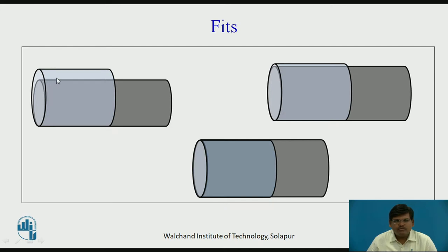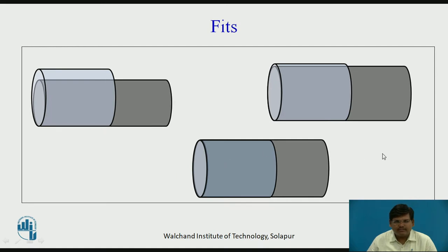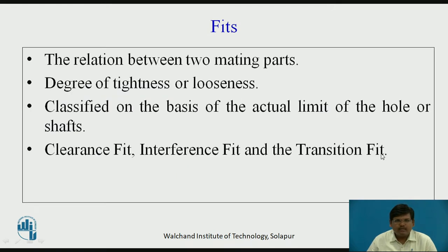Shafts are used to have joining or to have the degree of tightness or looseness between two parts coming in contact with each other. In the first case, the shaft fits loosely in the hole; in the second, the degree of looseness is reduced; and in the third, the shaft exactly fits in the hole. Depending upon these cases, the fits are classified. The relation between two mating parts is known as fits — how the two parts are being joined together or come together.